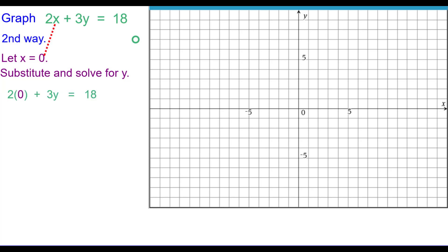So substituting 0 in for X. 2 times 0 is 0. 0 plus 3Y is 3Y. And then we divide both sides by 3 and get Y equals 6. So the ordered pair is 0, 6. Again, press pause if needed. We'll plot 0, 6. And there it is on the Y axis.